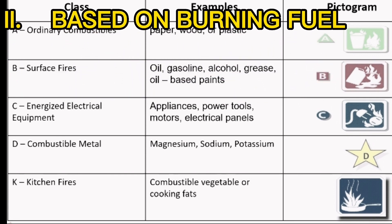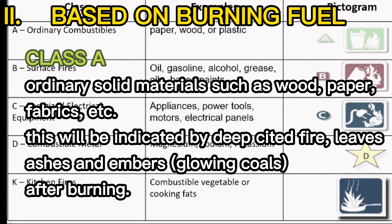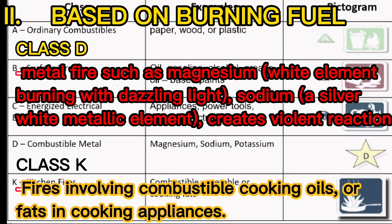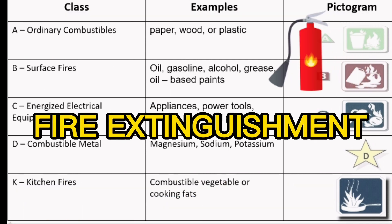Based on burning fuel: Class A — ordinary solid materials such as wood, paper, fabrics, etc. Indicated by deep-seated fire; leaves ashes and embers, glowing coals after burning. Class B — flammable liquids such as gasoline, lube oil, kerosene, paint thinner, etc. Class C — electrical appliances; causes electric shock. Class D — metal fires such as magnesium (a white element burning with dazzling light) and sodium (a silver-white metallic element, etc.); creates violent reaction. Class K — cooking oils and fats.